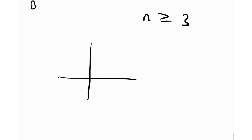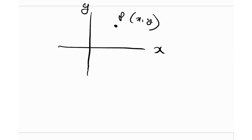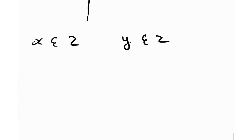A lattice point is any point on the coordinate axis. So if we have a coordinate axis x, y, and a point P = (x, y), then P will be a lattice point if both x and y are integers. If both its coordinates are integers, it's a lattice point — it's as simple as that. In a way, 'lattice' is just representing the word 'integer.'